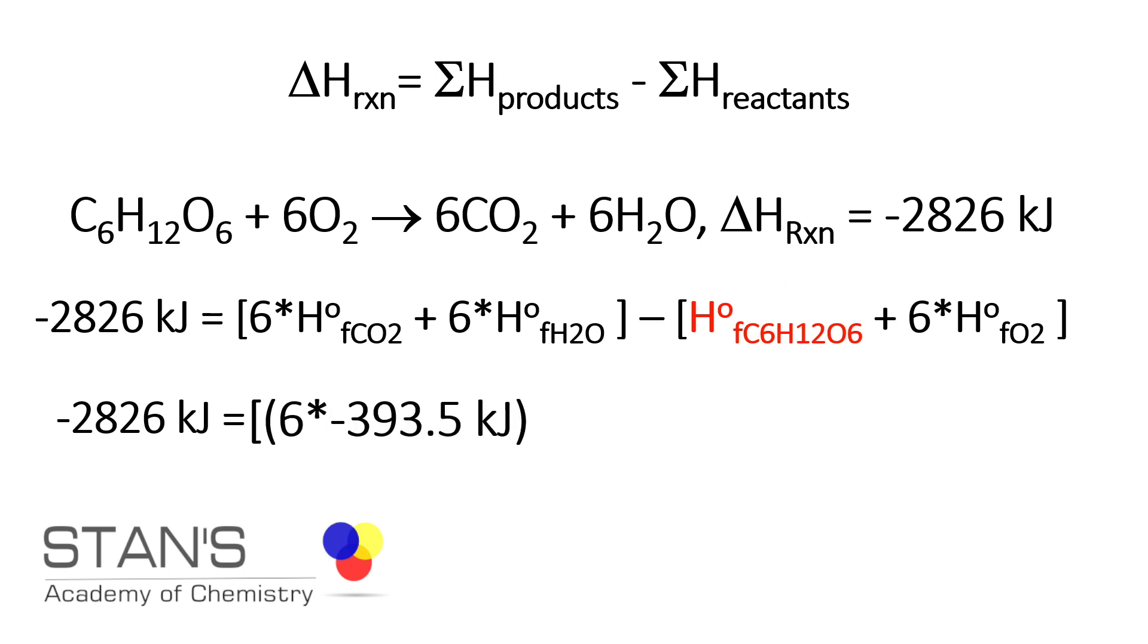Substituting the values, we get six times minus 393.5 equals 2,361 kilojoules. Similarly, six times negative 285.82 kilojoules gives you negative 1714.92 kilojoules. X represents the heat of formation of glucose, which we have to determine, and the enthalpy of formation of oxygen is zero.